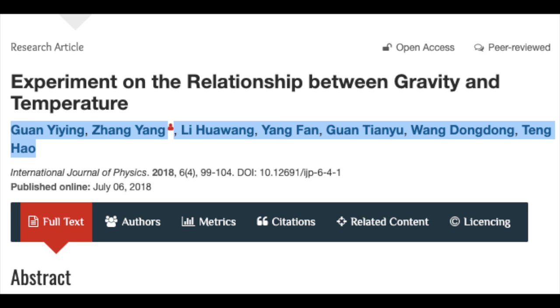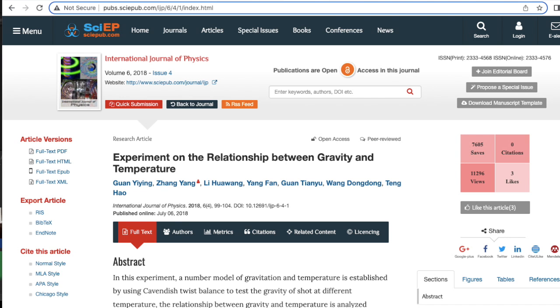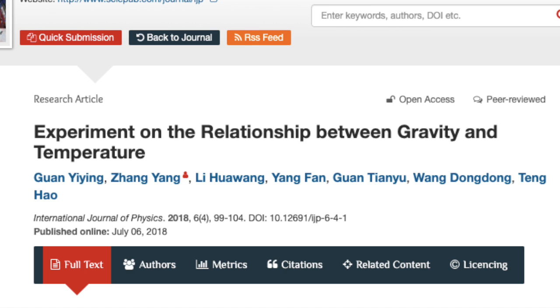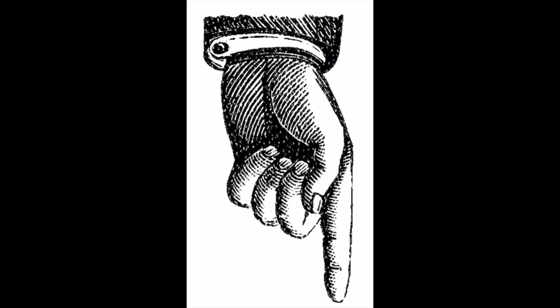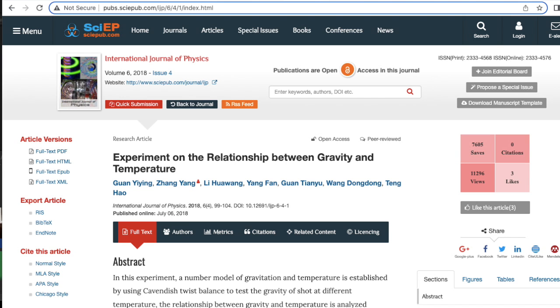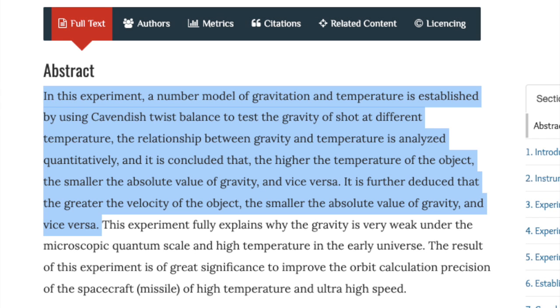In 2018, a group of Chinese scientists published a paper at the International Journal of Physics called Experiment on the Relationship Between Gravity and Temperature. You'll find a link to this article in the description of this video. On this paper they discussed the results of an experiment that studied the relation between temperature and gravity.